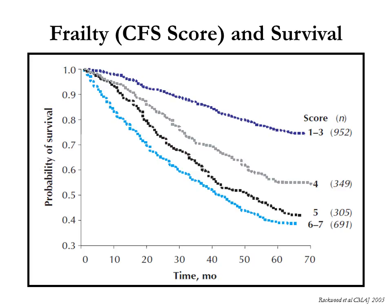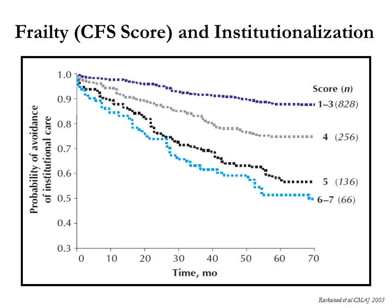In the Canadian Study of Health and Aging, the Clinical Frailty Scale clearly discriminated patients who had a higher risk of mortality five years after entering the study — higher scores were associated with a much lower probability of survival. In addition, the CFS score also discriminated patients likely to go on to need institutional care at skilled nursing facilities or long-term care, with higher scores representing a greater proportion of patients who ultimately required institutionalization.